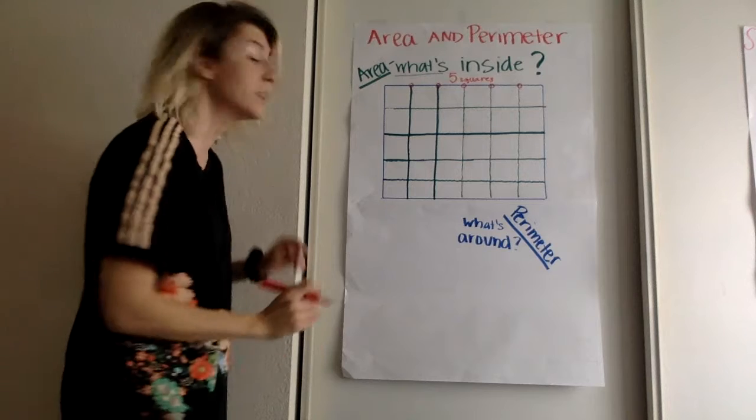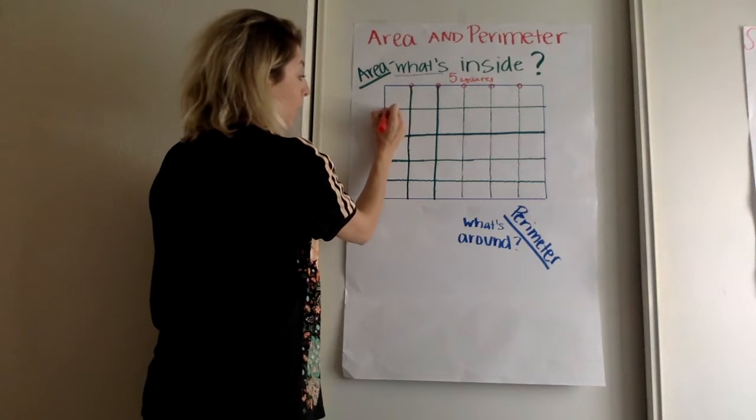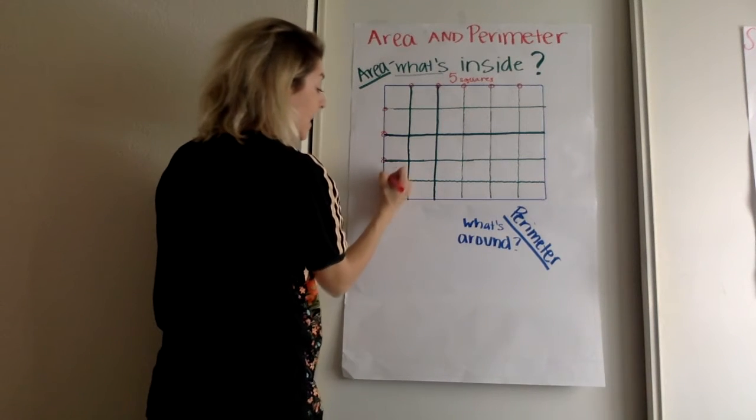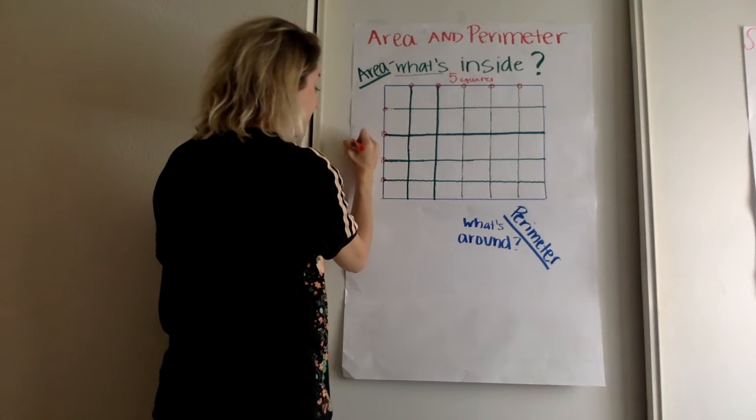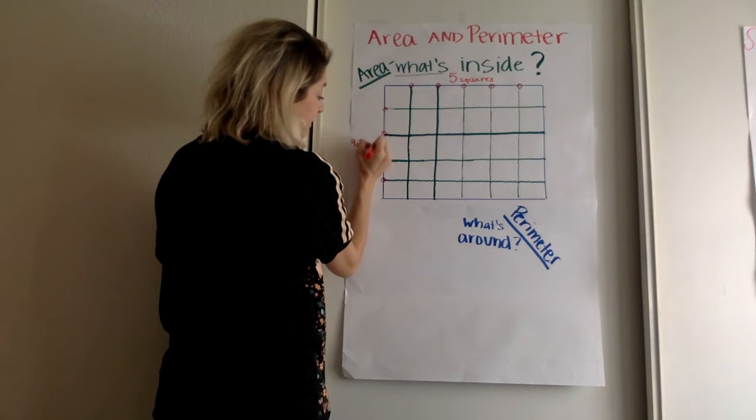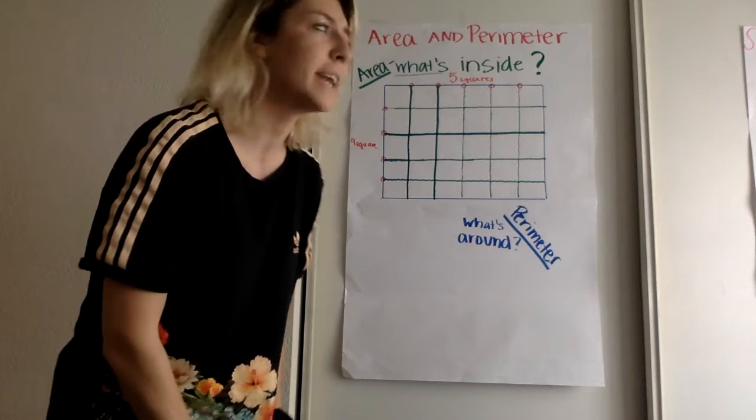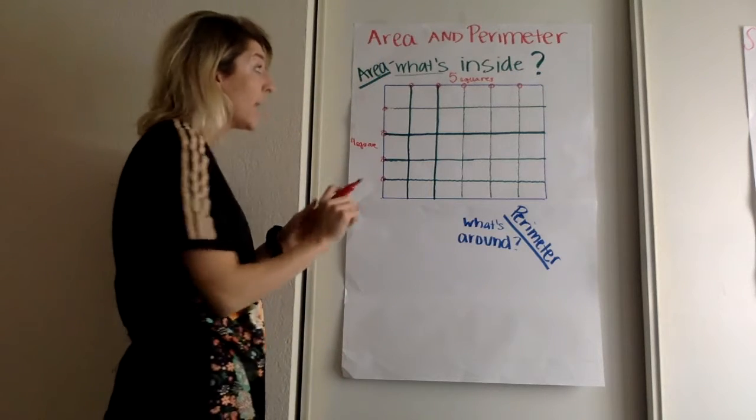Now, let's see how many squares we have on the bottom. One, two, three, four. We have four squares. I wish I was playing four square right now. That would be fun.